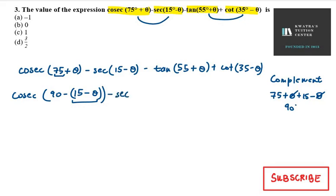Now I will change. I will keep tan 55 plus theta - sorry, this will be minus here. So minus tan(55 + θ), then we have cot(35 - θ).